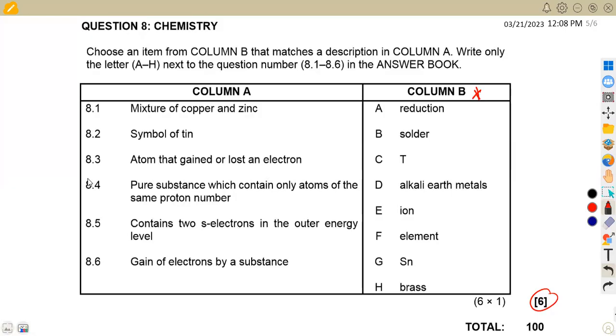8.1, a mixture of copper and zinc. What do we obtain if we mix copper and zinc? So we must obtain brass in this case here. So this is brass, and our brass, it's at H. So this is going to be H.